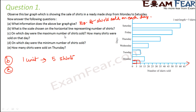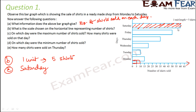Third question: on which day were the maximum number of shirts sold, and how many shirts were sold on that day? The length of the bar is maximum on Saturday, so on Saturday the maximum number of shirts were sold. Looking at the bar, it represents 60 shirts — so on Saturday, 60 shirts were sold.